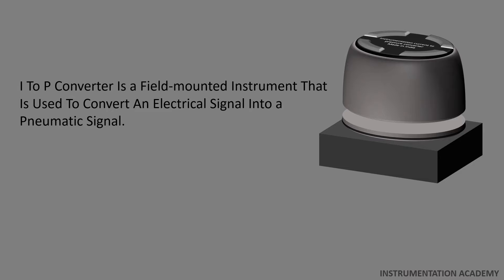I2P converter is a field-mounted instrument that is used to convert an electrical signal into a pneumatic signal, that is, the air pressure signal.